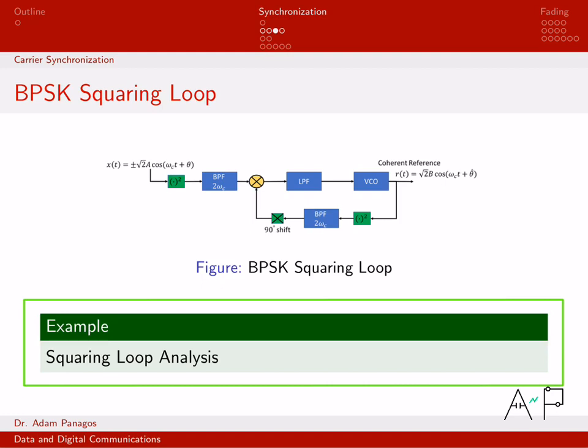So let's walk through a slightly more complicated block diagram now. We have to trace it all the way around to make sure this input is what we want it to be. So squaring loop analysis. First of all, what is the input?